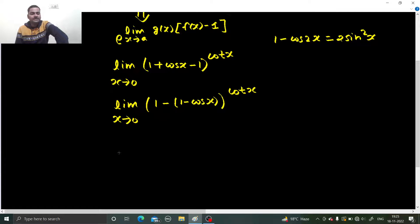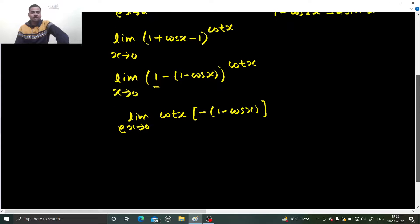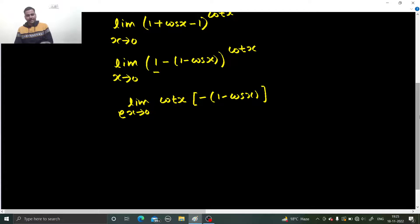So we can write this as e power limit x tending to 0, cot x comes down, you subtract 1 from this, so this 1 will vanish. You are left with this thing minus of 1 minus cos x, so 1 minus cos x will be 2 sin square x by 2.